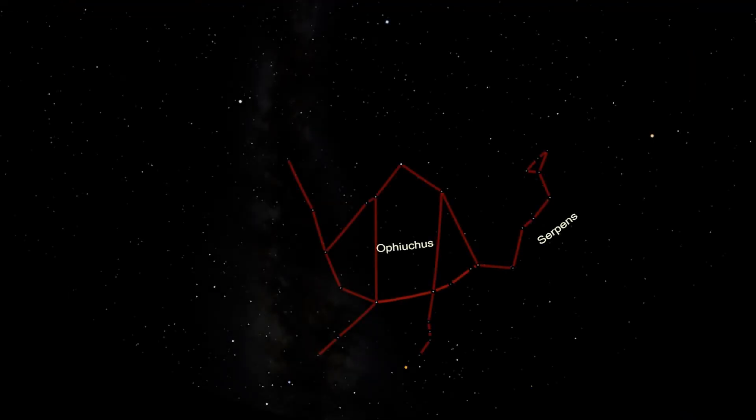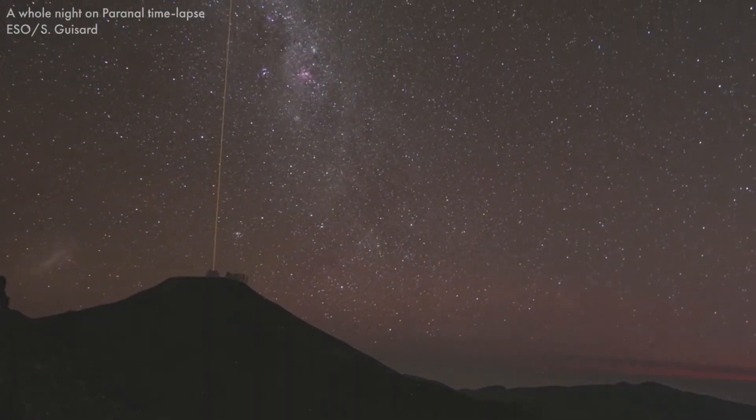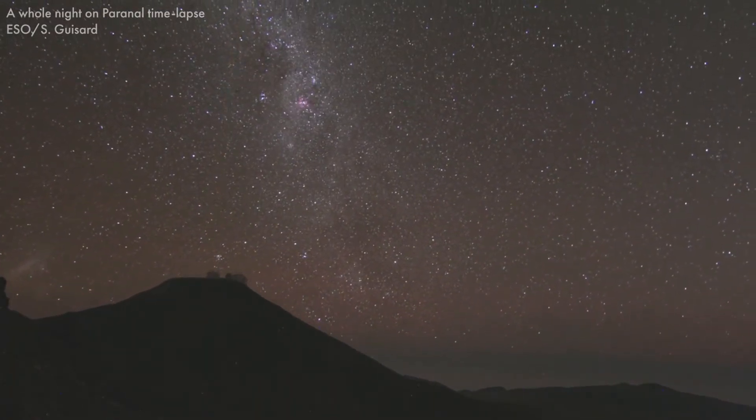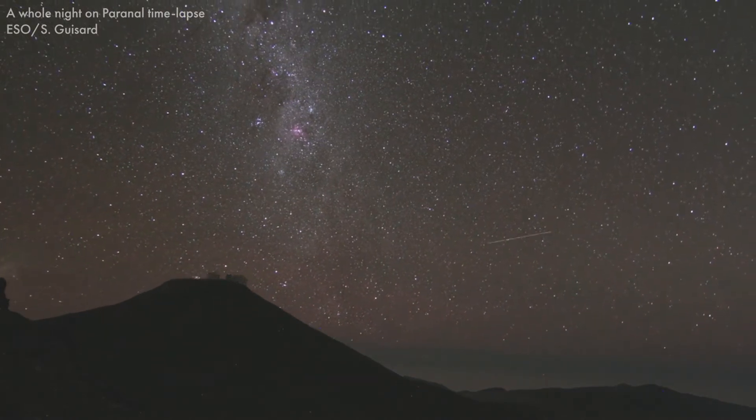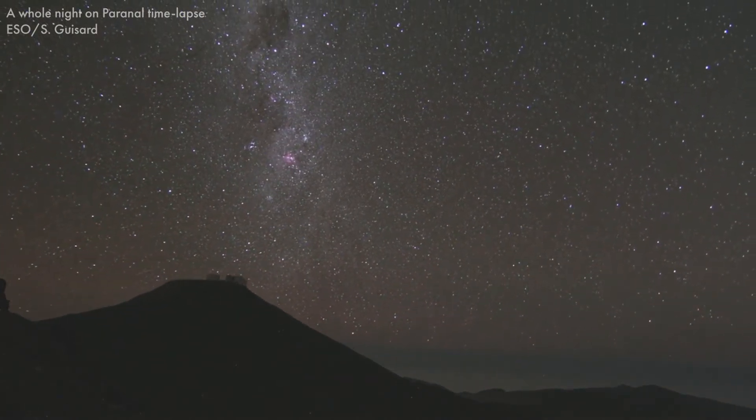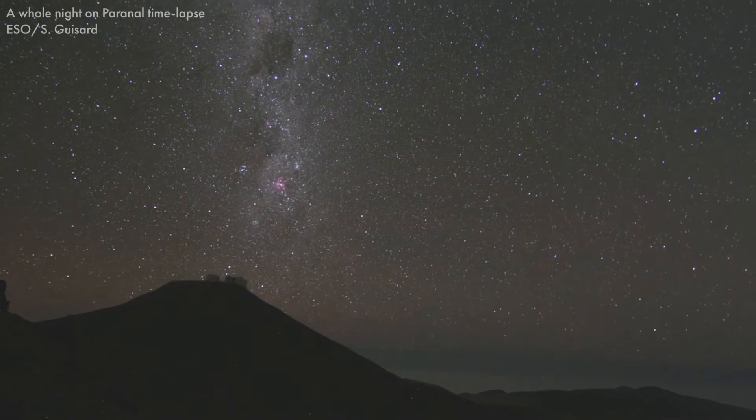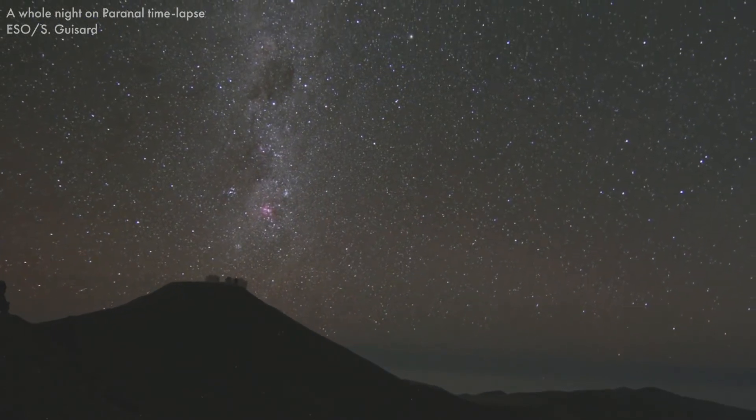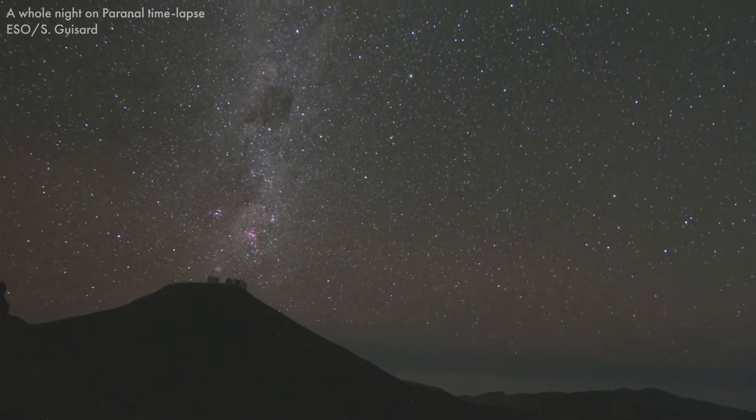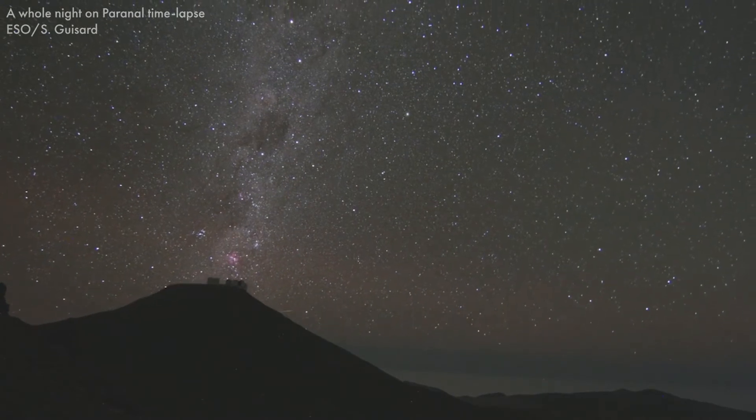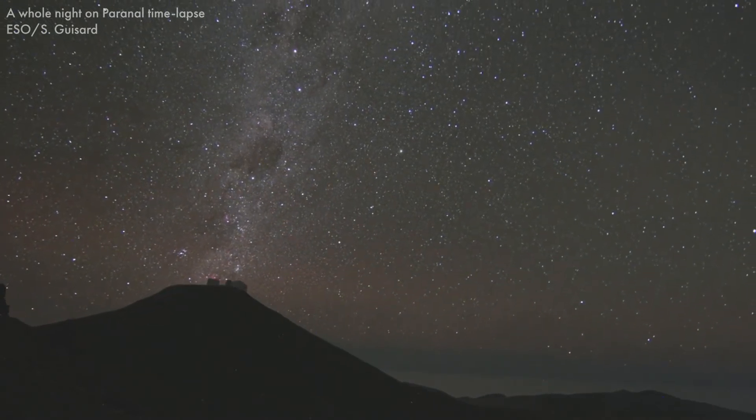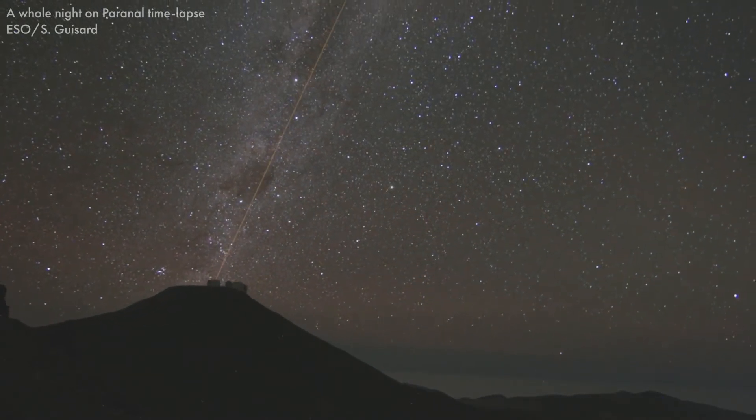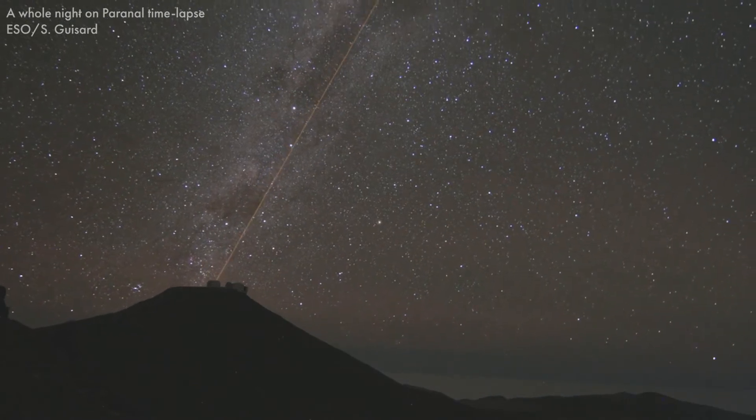But Ophiuchus and Serpens also serve as a reminder of the changing nature of the night sky. Over the course of a human lifetime, the night sky doesn't change very much. This can lead to the false impression that the stars are permanent and unchanging. The universe does change, but on a timescale that dwarfs our regular measures of time. It's only through passing down our astronomical observations over the generations that we can recognize their patterns.